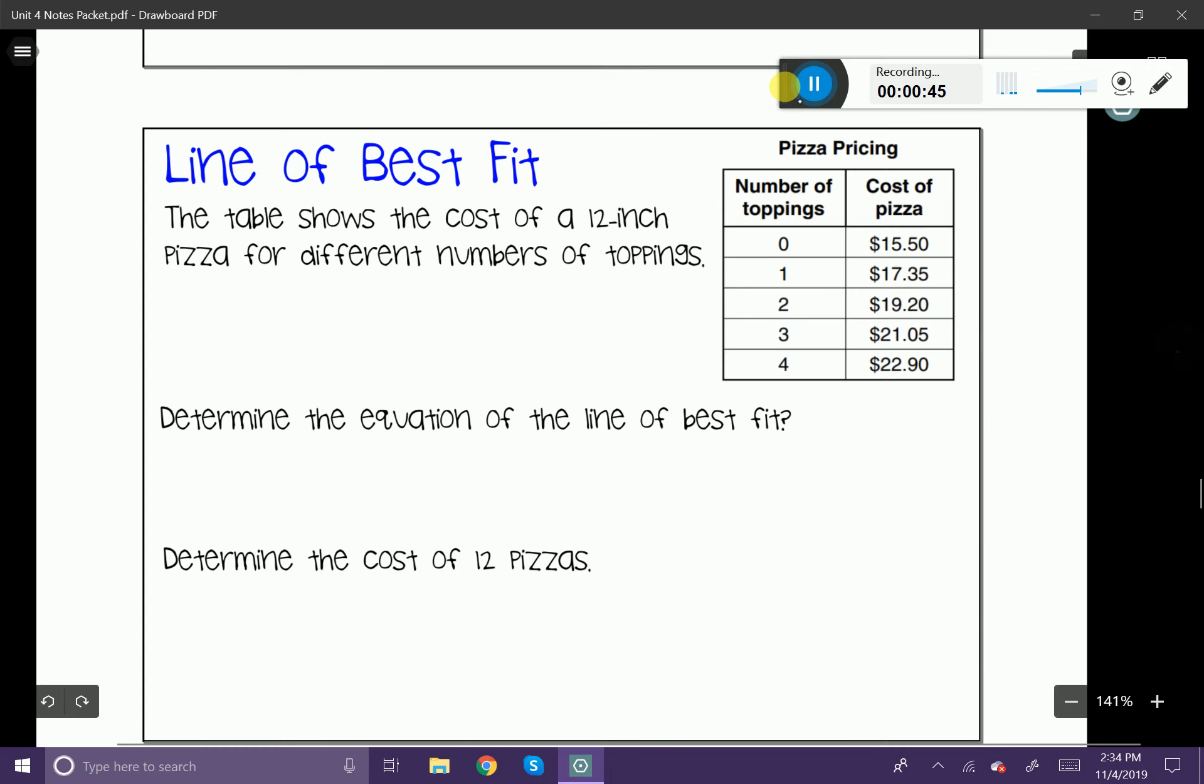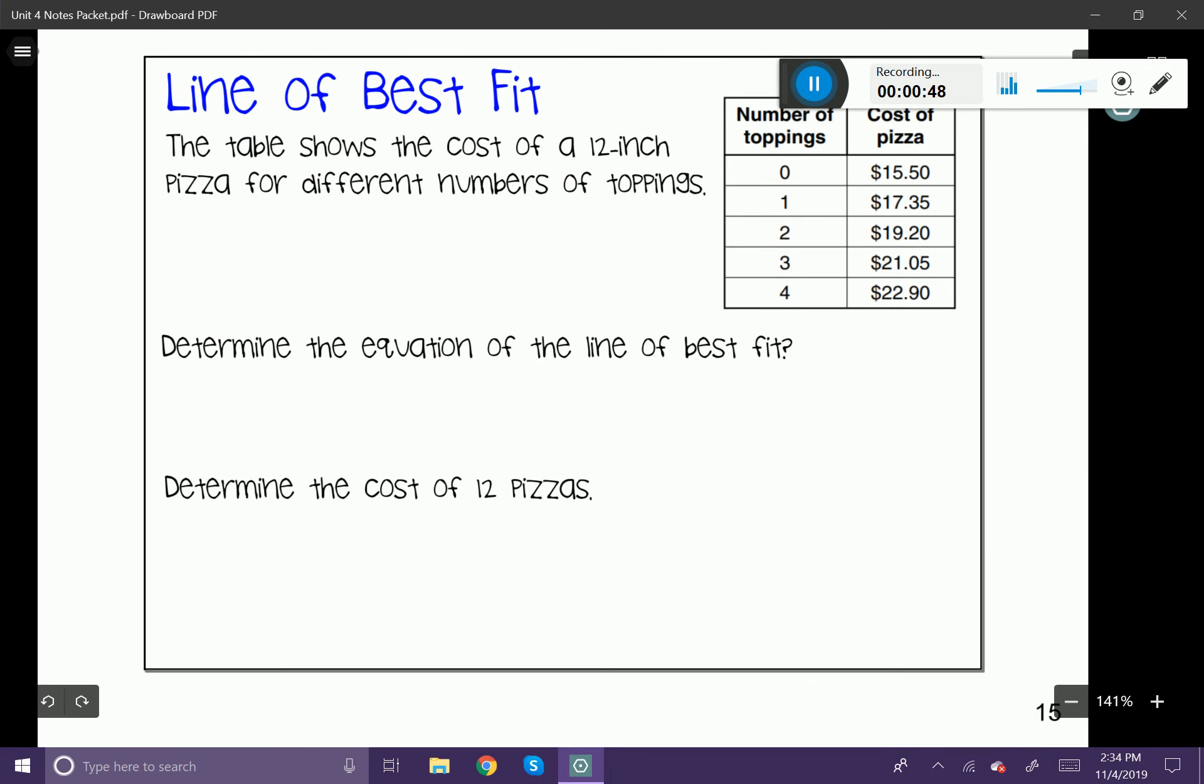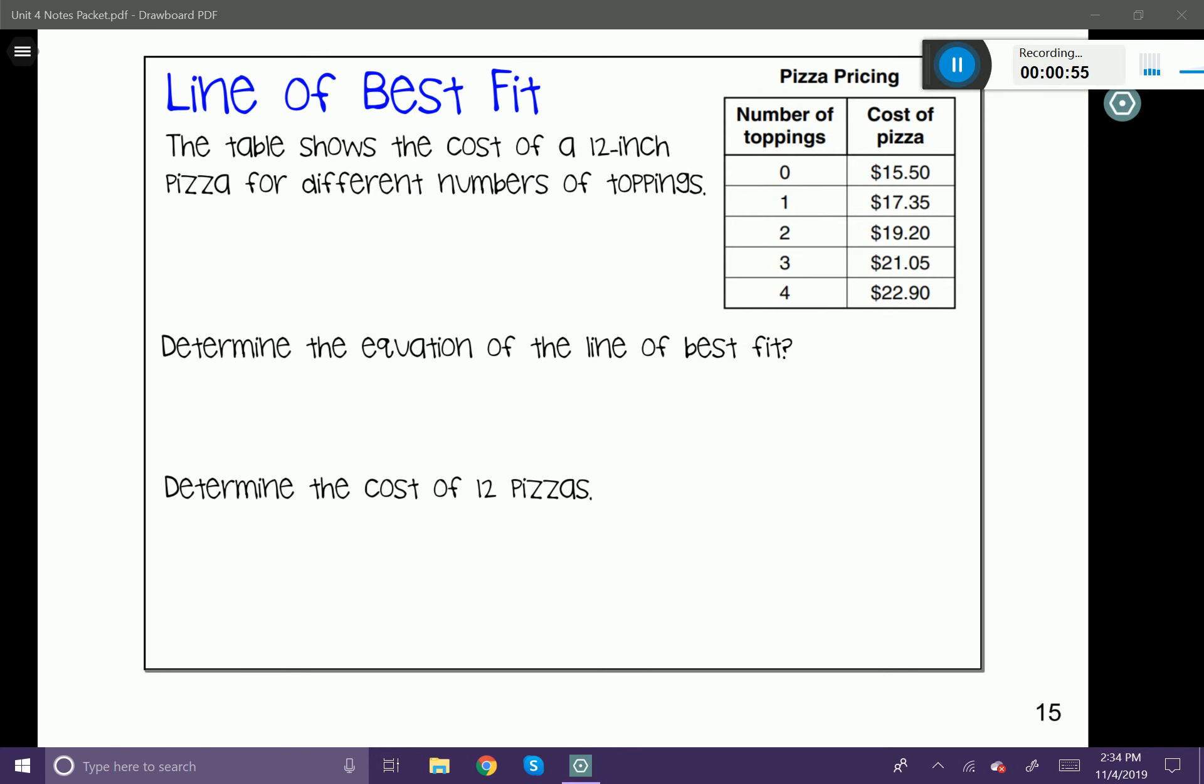Let's look at this first problem here. The table shows the cost of a 12 inch pizza for different numbers of toppings. So you can see here in our table, it says the number of toppings, and then they give us 0 through 4. And then the cost of the pizza is different and it increases as you add more toppings. So what we want to do is picture what this looks like. We can picture this visually in our minds or we can come up with it on our graphing calculator. Let's go ahead and do that.